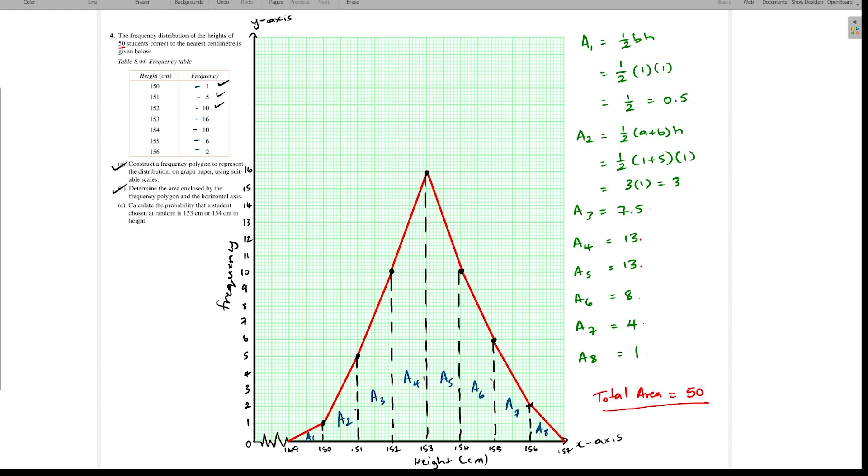The last part of this question is asking us to calculate the probability that a student chosen at random is 153 centimeters or 154 centimeters. If you look on the table, 153 centimeters would have a frequency of 16, so that's 16 over 50, plus 154 would have a frequency of 10, 10 over 50, because we have 50 students in total. That's 26 over 50, which is the same as 13 over 25. We would occasionally leave our probability in a fraction at this level of math.